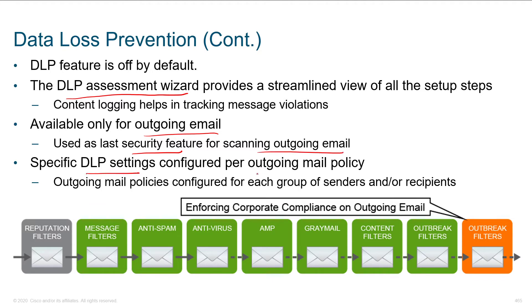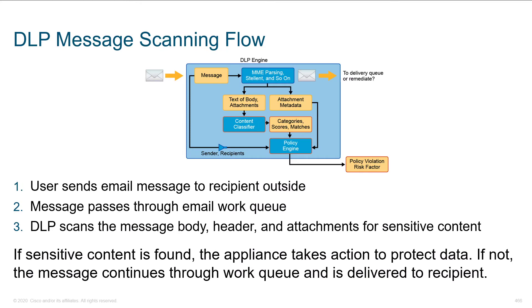Specific DLP settings can be configured per outgoing mail policy, meaning we can create different policies for different groups of users — IT, HR, et cetera — and we can apply different dirty word lists to different groups. The DLP engine scans the message itself, but don't forget we're also looking at the attachments within the message. We can even look at things like metadata.